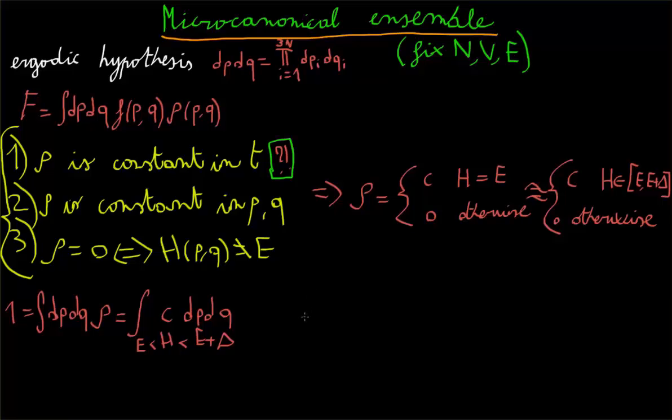Now we can simply, therefore, we can define the integral gamma delta of E as the integral with the energy satisfying the condition which we just imposed of dp,